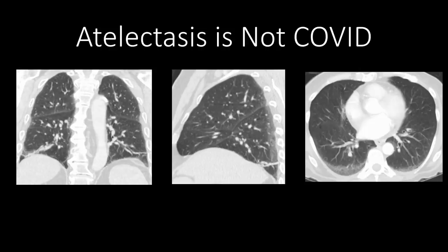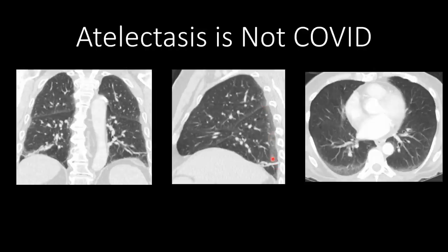Now let's talk about pitfalls to avoid. We need to make sure we are not calling atelectasis as organizing pneumonia, viral pneumonia, or raising concern for COVID. Atelectasis can have linear opacities that tend to be in the dependent portions of the lungs and lower lobes, often due to poor inspiratory effort. You can also get peripheral ground glass opacification related to atelectasis, but that peripheral ground glass opacification is usually limited to the dependent portions of the lungs.